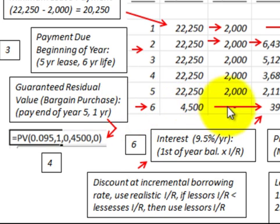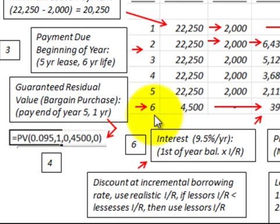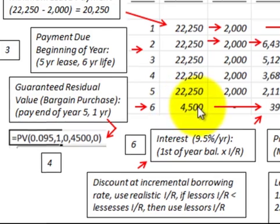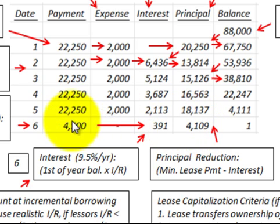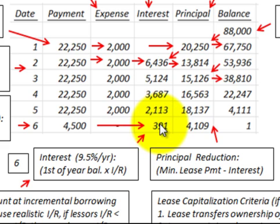We have to discount the guaranteed residual value back to the beginning of year five. Using a present value function in Excel and discounting the $4,500 payment at the end of year five, the principal amount at the beginning of year five is $4,109. The difference — $4,500 less $4,109 — gives us $391 of interest expense for that guaranteed residual value.